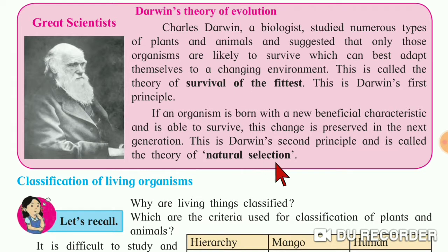It means if an organism is born with a new beneficial characteristic and is able to survive, this change is preserved in the next generation. That is called the theory of natural selection.